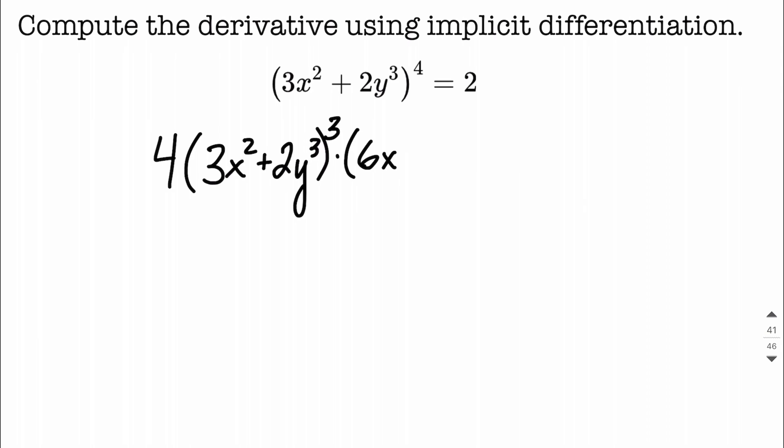Our variable is x, so we don't really need a dx over dx with this. Next, we're going to add derivative of 2y to the third power, which is going to be 6y to the second power, just using the power rule.